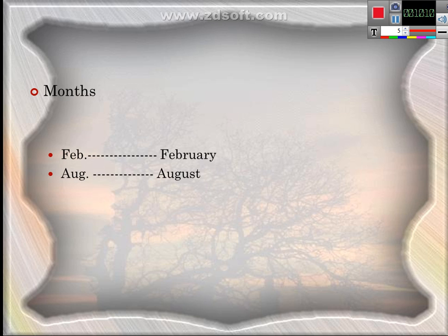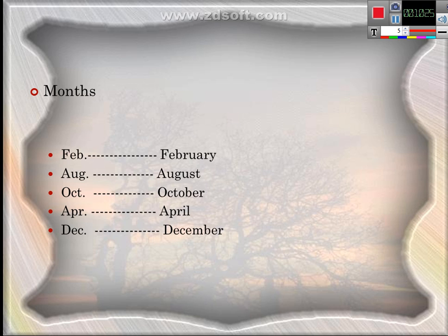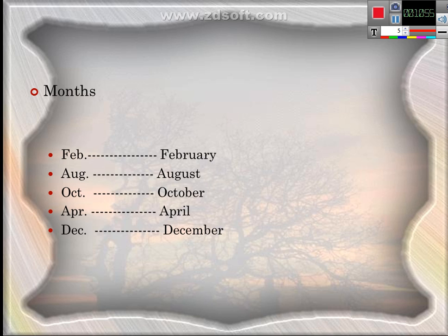Another example: A-U-G, dot — Aug. — abbreviation of August. Remember, the first letter is capital and it ends with a period. O-C-T — abbreviation of October. A-P-R — abbreviation of April. D-E-C — abbreviation of December. So we have five examples of month abbreviations: Feb., Aug., Oct., Apr., and Dec.